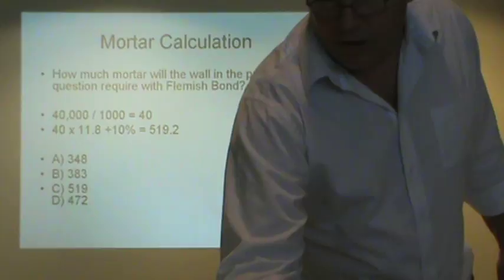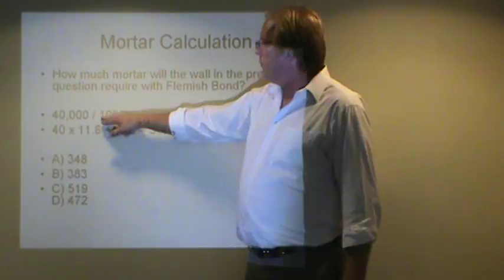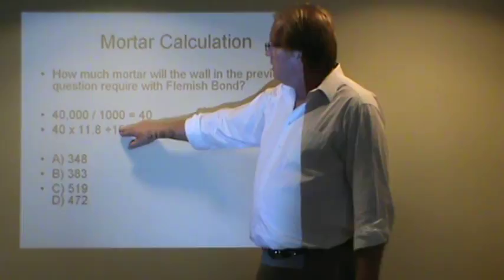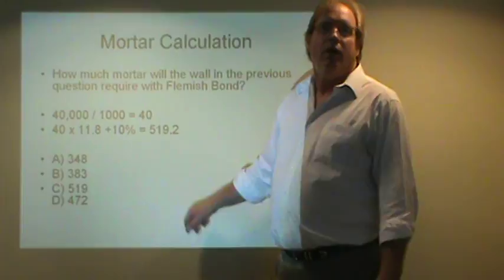All right, 537. That was 11.8 per thousand brick. So we take 40,000 divided by 1,000, we get 40. 40 times 11.8, plus 10 percent. That's 472.